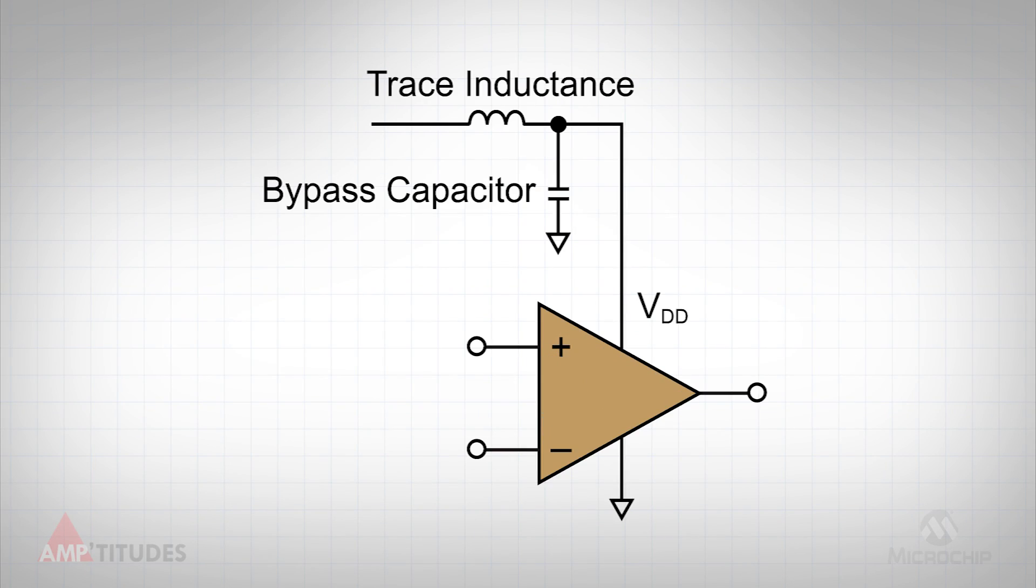One such technique is to use a bypass capacitor on the power supply line, as shown here. The capacitor works together with the inductance of the PCB trace to create a low-pass filter.